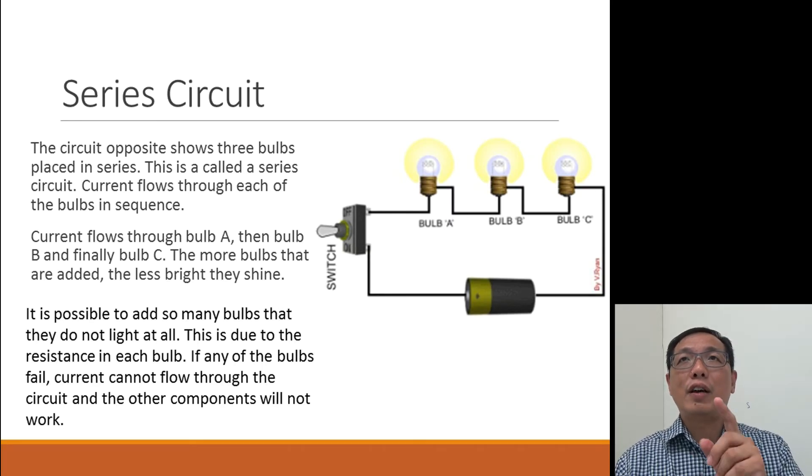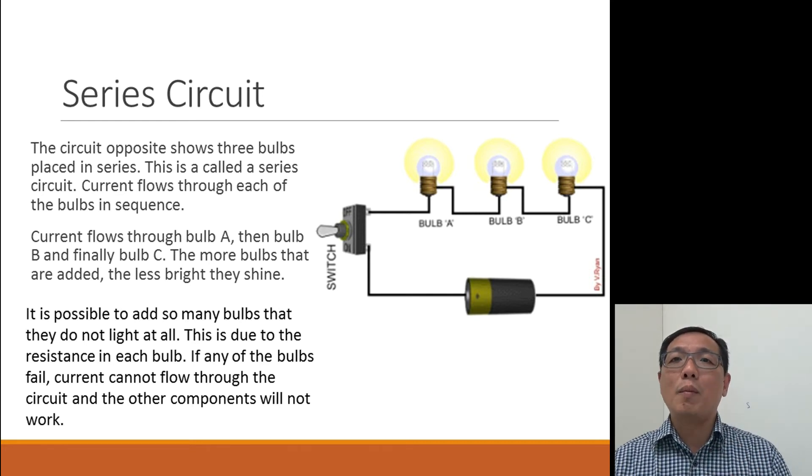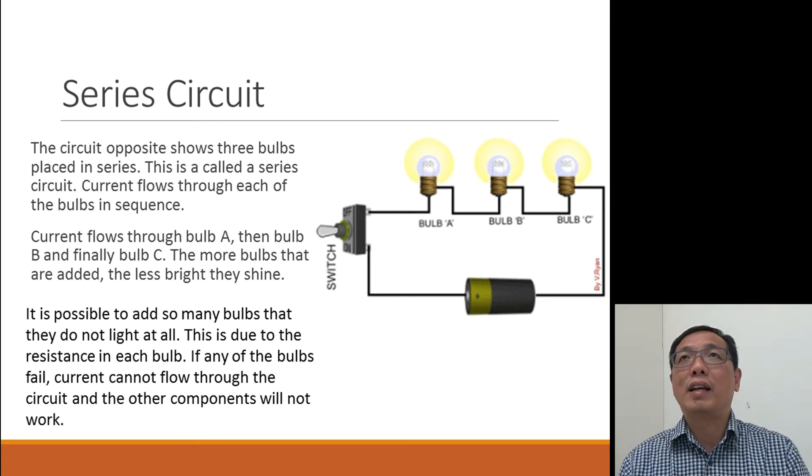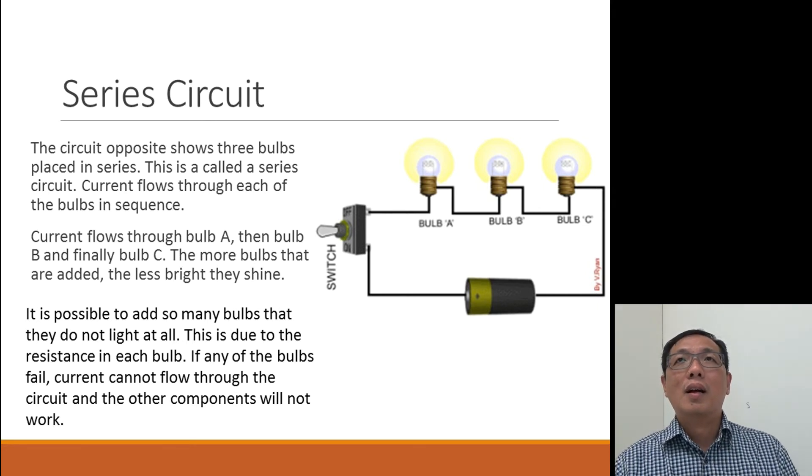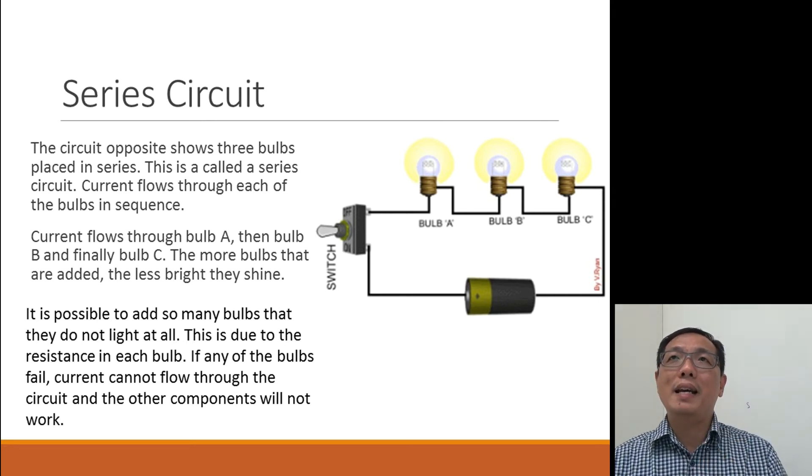Series circuit. You look at the series circuit, you have three bulbs, A, B, and C. And the current will flow through the series. Now, is it possible to add so many bulbs that the circuit doesn't light up? It's possible. What happened if bulb A is blown?